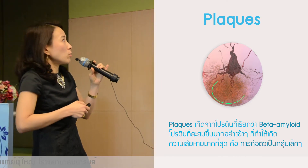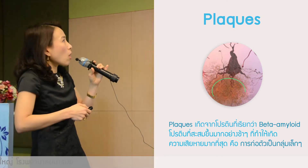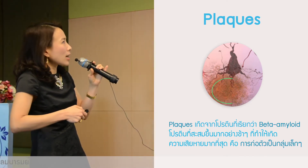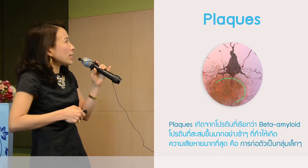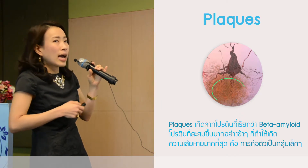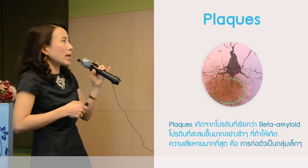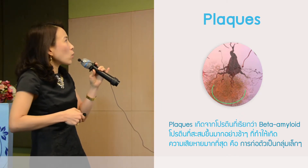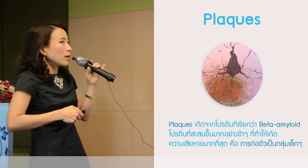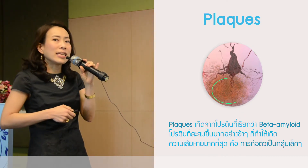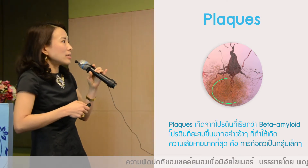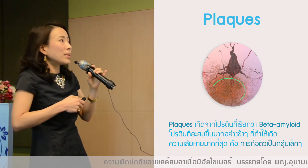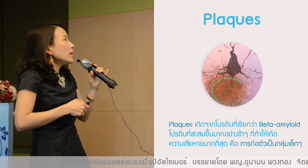Beta-amyloid is formed from the outside cell, while another type is formed from the inside cell. There are a lot of proteins that are misfolded — they will be misfolded from the form, so they will not return to normal form.